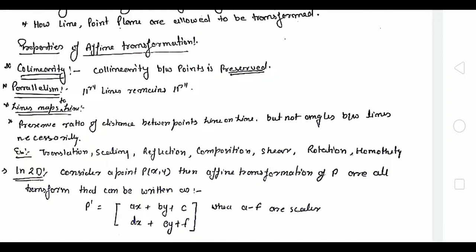Homothety means if three points are there and those three lines are meeting at one point — if we consider that one meeting point and it is transformed to another point, you can see those three lines are meeting at one point but at the other end they go far away from each other. This is called homothety.